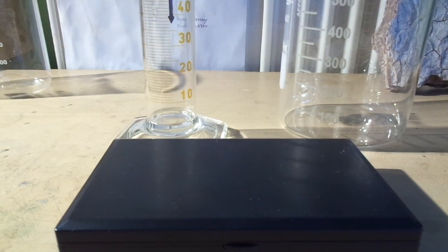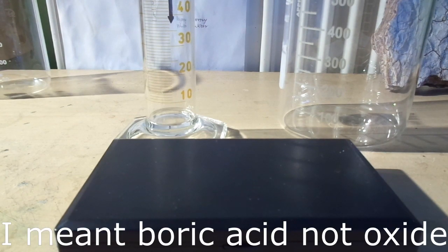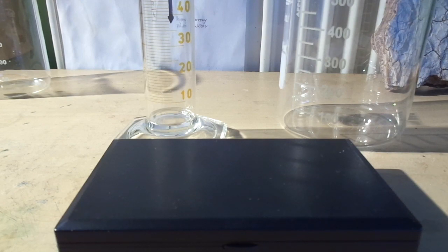Today I'm going to make some boric acid from hydrochloric acid and borax. To produce 20 grams of boric oxide, you will need 30 grams of borax. I will measure that out.